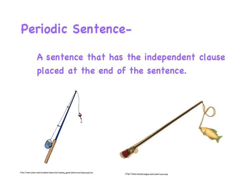Imagine a fishing pole. When you cast out, you never know what you're going to get back. Sometimes you'll have an empty hook, and sometimes you'll have a fish. A periodic sentence keeps the reader in suspense until the end of the sentence where they find the independent clause.